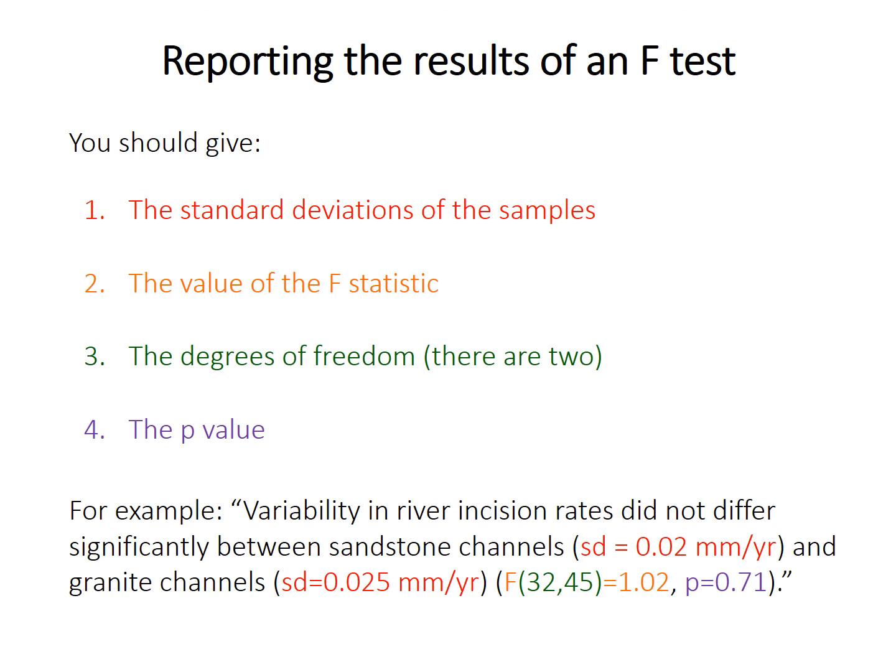You can phrase your results something like this: variability in river incision rates did not differ significantly between sandstone channels—I've given the standard deviation with its units—or granite channels. I've given the standard deviation for that. Then I write F, in parentheses are the two degrees of freedom, the F-statistic, and the p-value. Remember, if the p-value is very tiny, you can just say less than 0.01. That's a standard thing you can do.